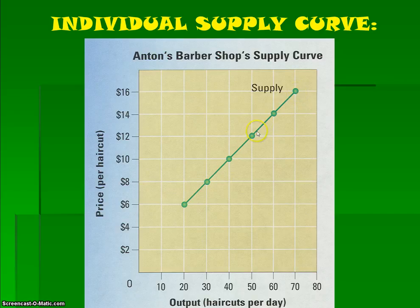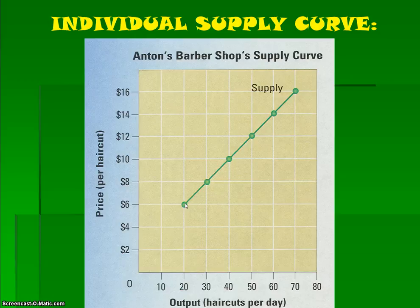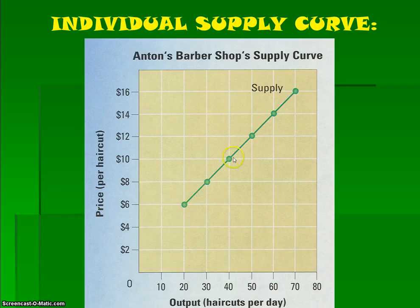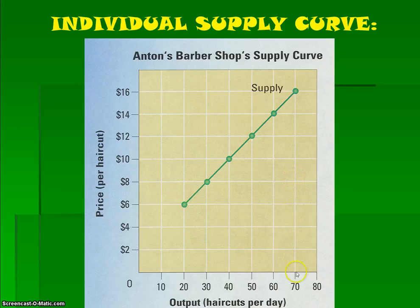As the price fluctuates, there will just be a movement up or down the curve. The reason he is able to produce more haircuts as the price increases is: if he was doing haircuts for six bucks a piece, he's not going to be making a lot of profit per haircut, and he's not going to be able to afford a nice location or people to work in the shop with him — it'll probably just be him doing haircuts by himself out of his garage. But as the price per haircut increases, the amount Anton is able to offer increases because he's making more profit per unit. At a high price of $16 a haircut, Anton can do 70 haircuts a day because he can hire an assistant barber, afford rent on a busier street, and hire a receptionist to organize the wait list.